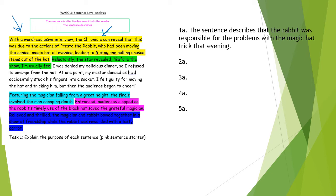They can reveal this was due to the actions of Presto the rabbit. I think that's the first time that it actually tells us the name of the rabbit, so it might be an important detail. It explains that the rabbit had been moving the chronicle magic hat all evening. So it's saying that he's responsible. So that might be something we need to include.